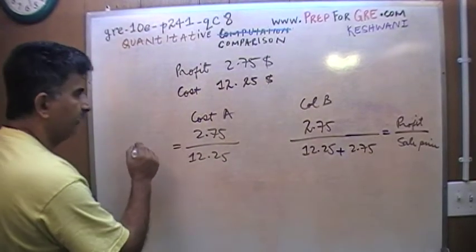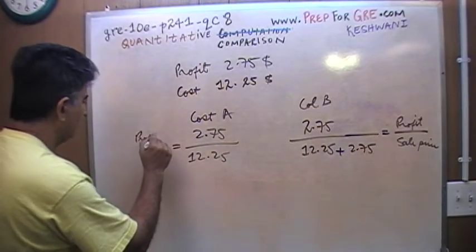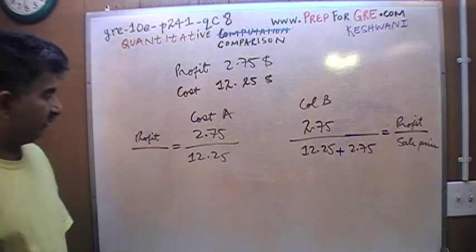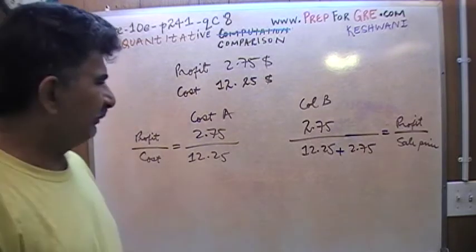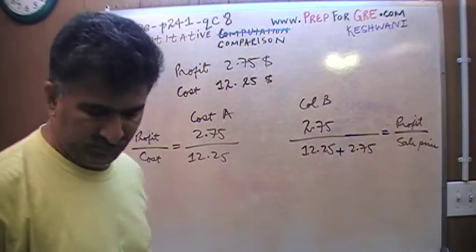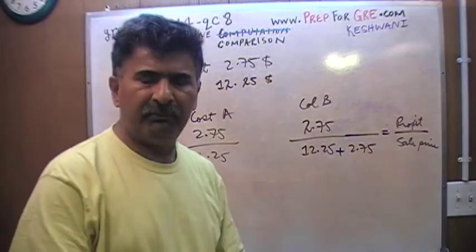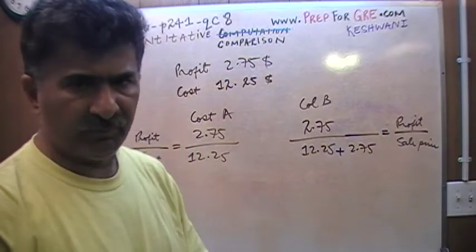And here is the profit expressed as a percentage of the cost. Don't worry about the fact that I am not multiplying this by 100. There is no point in it. What's the point of multiplying both sides by 100? It serves no purpose.